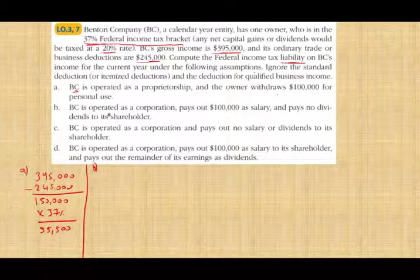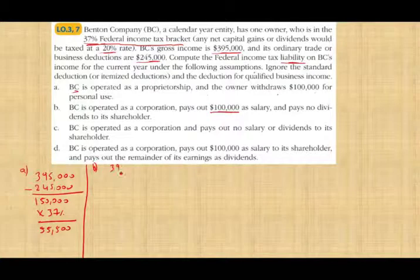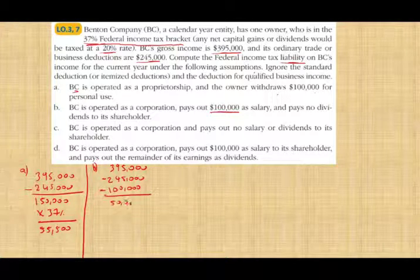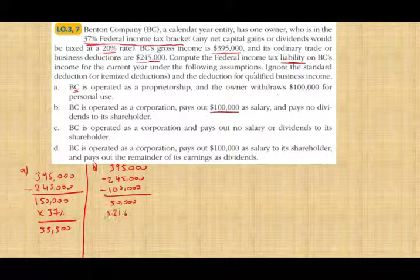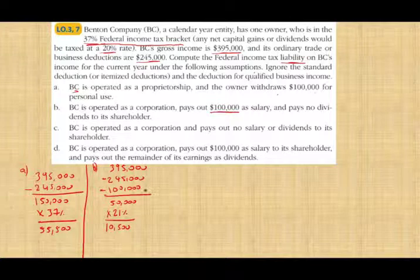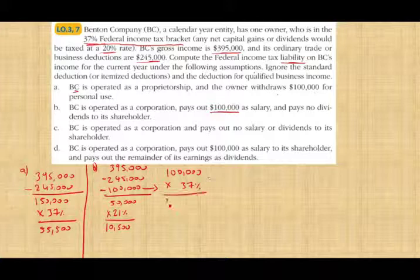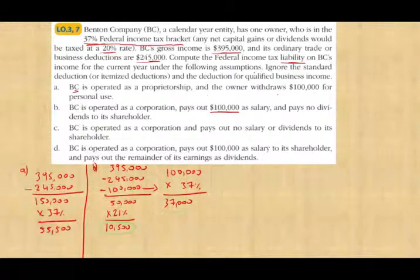Scenario B: BC is a corporation that pays out $100,000 as salary and no dividend. So $395,000 minus $245,000 minus $100,000 salary equals taxable income of $50,000. The corporation pays 21% on $50,000, which is $10,500. The owner receives a W-2 for $100,000 and pays 37% on that salary, which is $37,000. Total taxes under scenario B are $10,500 plus $37,000.